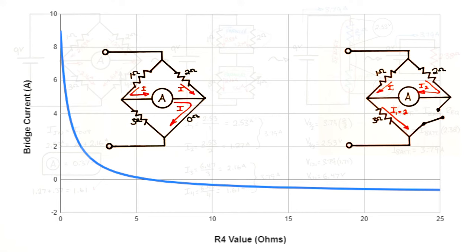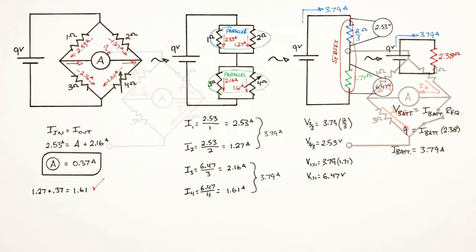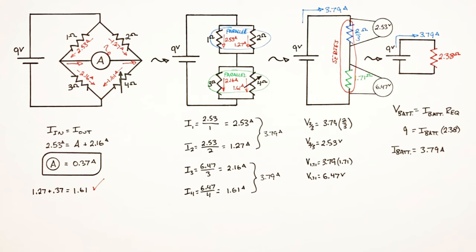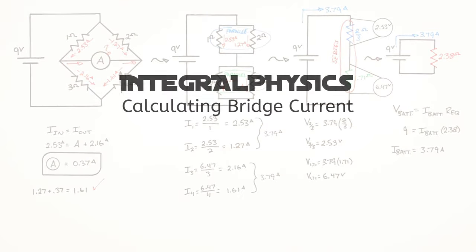At zero ohms the current goes from left to right, but with infinite resistance the current goes from right to left — these opposite directions carry opposite signs, as seen on the graph. Current traveling left to right through the ammeter was defined as positive, so right-to-left current shows up as negative. This has been how to solve for the current through the bridge on an unbalanced Wheatstone bridge.